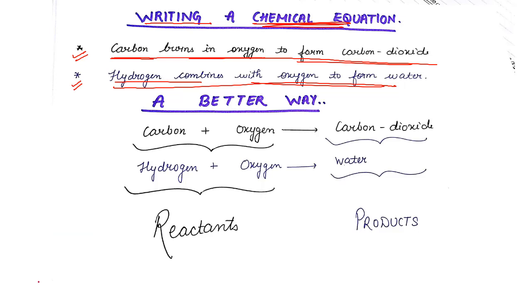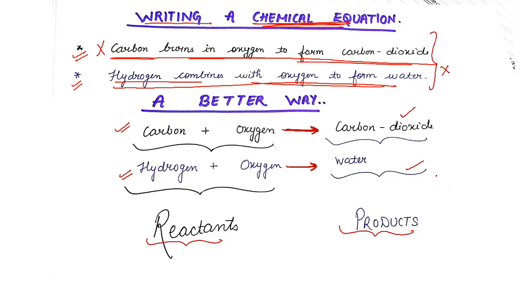A better way for representing a chemical equation is to write: carbon + oxygen → carbon dioxide. Similarly, hydrogen + oxygen → water. Now, whatever you write on the left-hand side of the arrow are the reactants — things which are combining together — and whatever new things are formed are the products. This is a simpler way of representing a chemical equation, but is there an even better way?